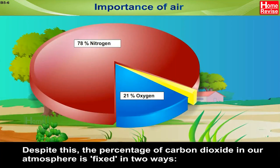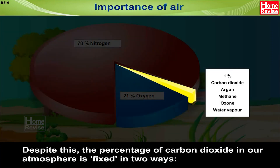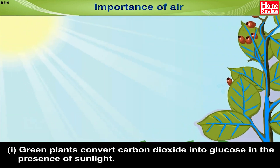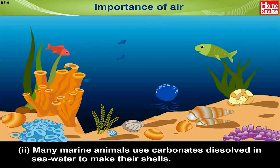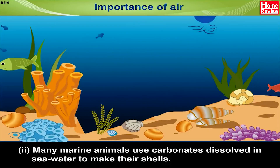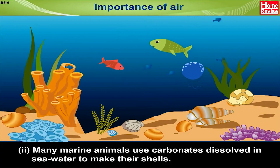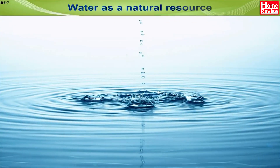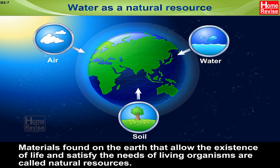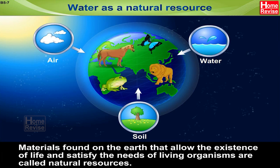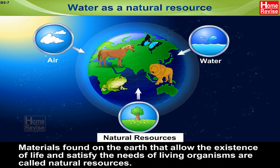Despite this, the percentage of carbon dioxide in our atmosphere is kept stable in two ways: green plants convert carbon dioxide into glucose in the presence of sunlight, and many marine animals use carbonates dissolved in seawater to make their shells. Water as a natural resource: materials found on the Earth that allow the existence of life and satisfy the needs of living organisms are called natural resources.